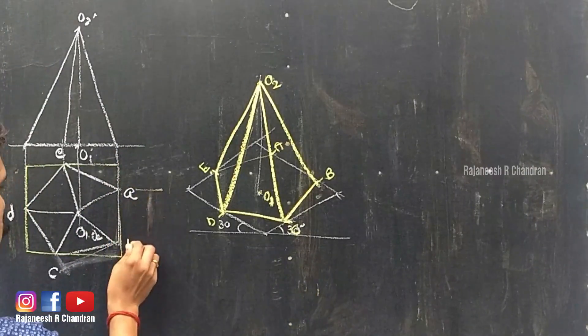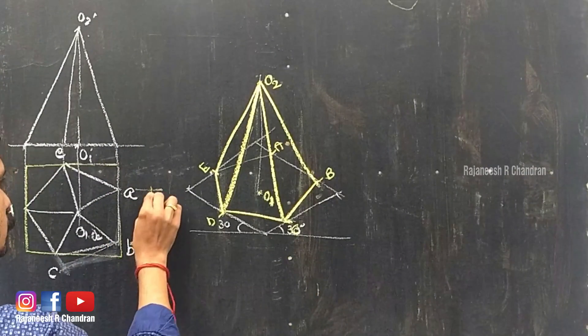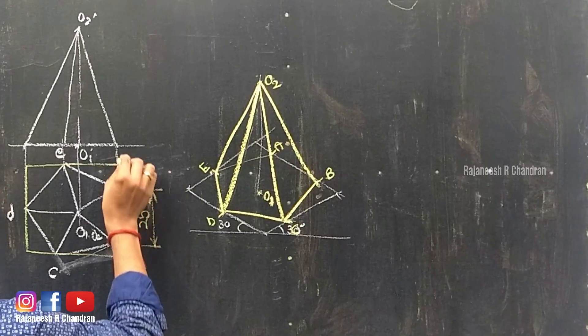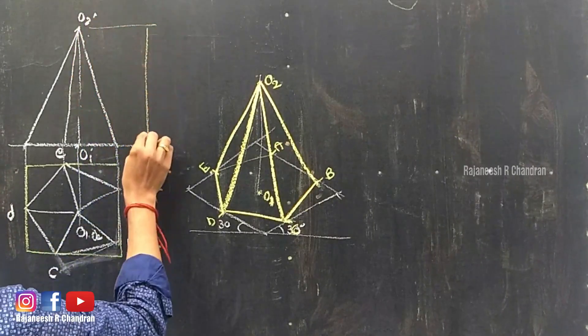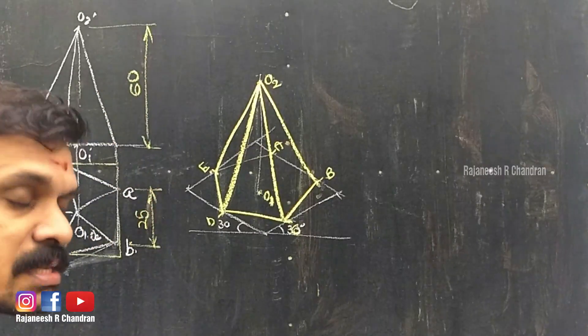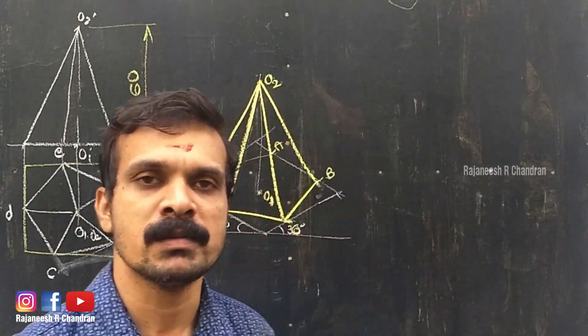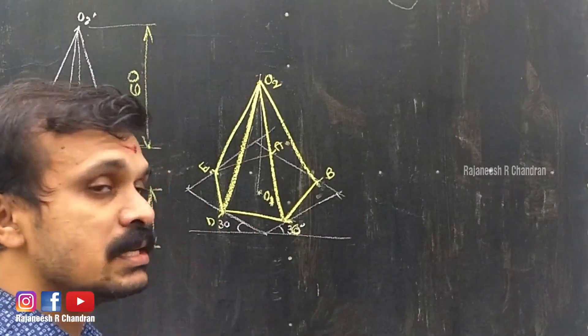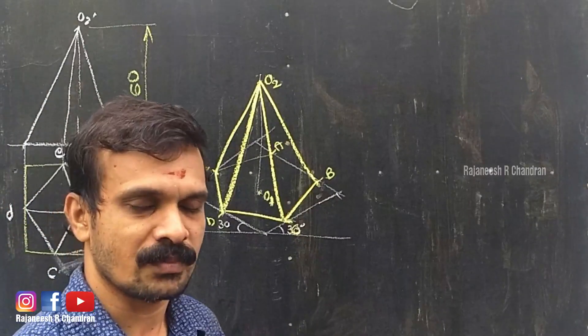This is the isometric view of the pentagonal pyramid which is resting on its base on the ground with one base edge perpendicular to VP. This is 25mm and this height will be 60mm.